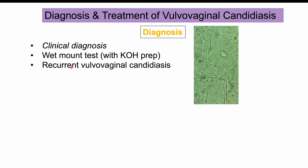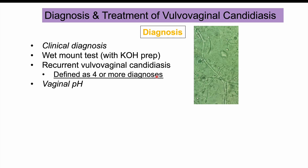Recurrent vulvovaginal candidiasis is defined as four or more diagnoses of vulvovaginal candidiasis. Some clinicians assess vaginal pH: in vulvovaginal candidiasis the pH is typically below 4.5, unlike trichomoniasis or bacterial vaginosis where the vaginal pH is above 4.5, which can help rule out those other conditions.